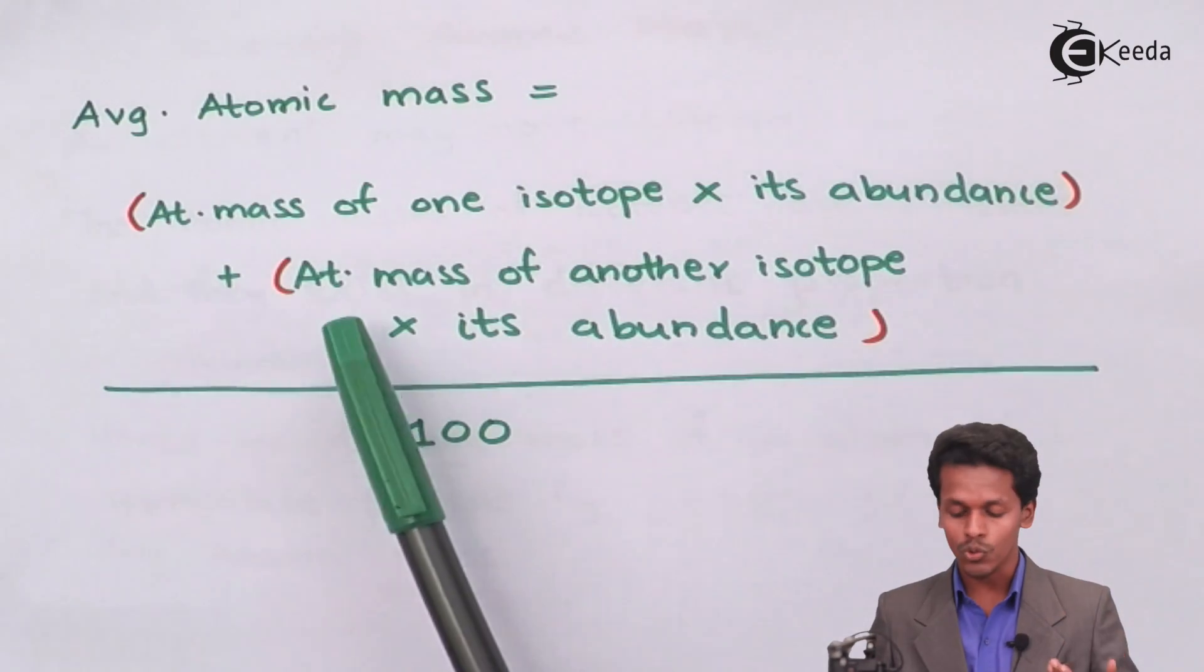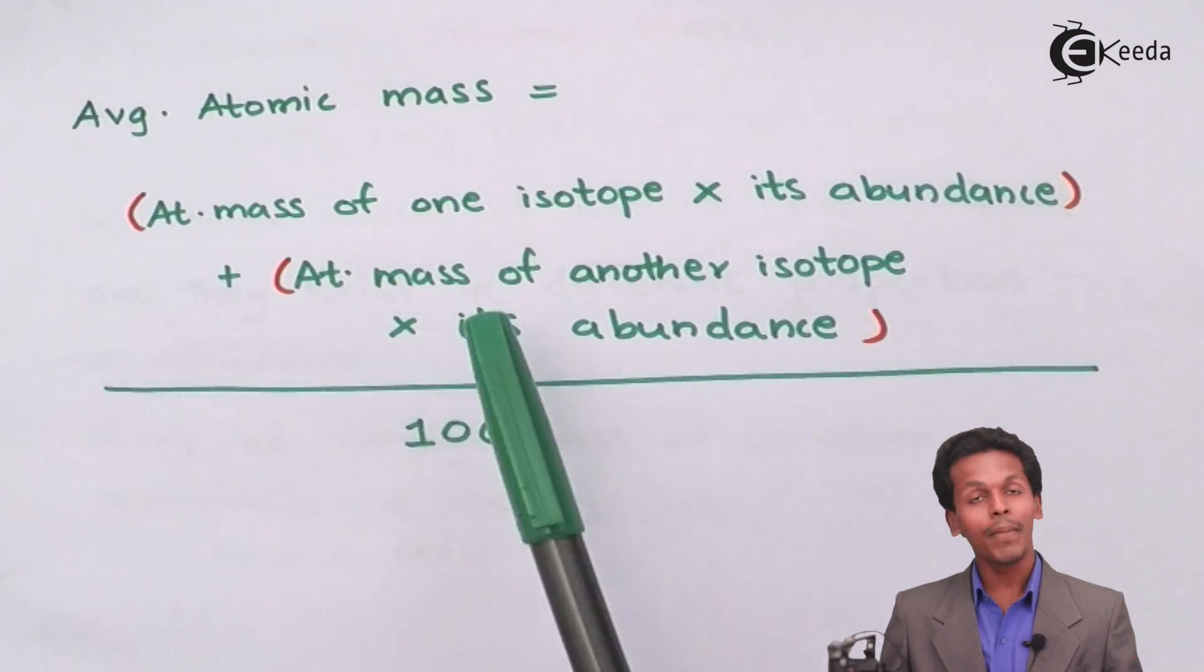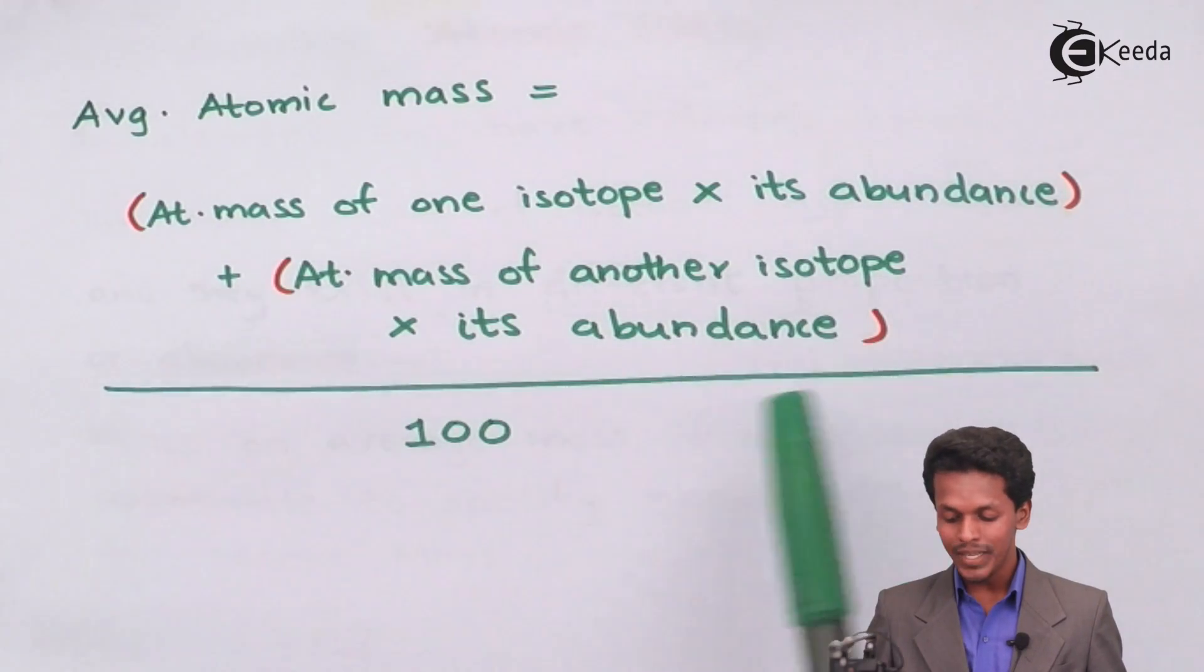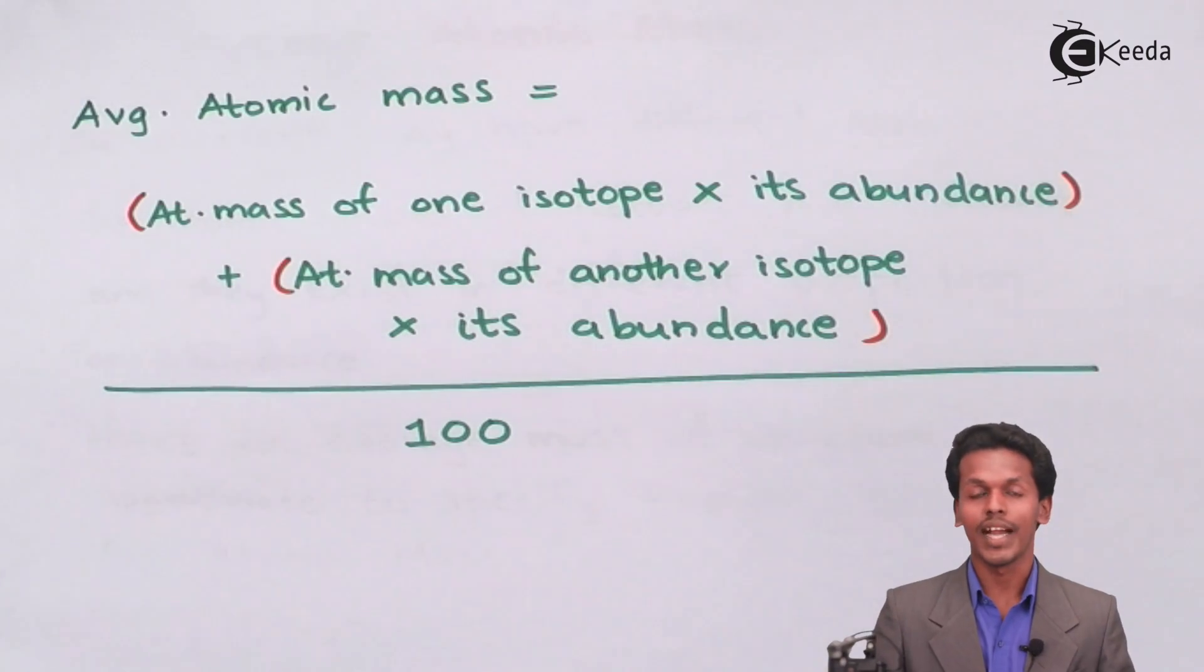For another isotope, the atomic mass of another isotope should be multiplied by its abundance, and the whole should be divided by 100. This is how we can calculate the average atomic mass.